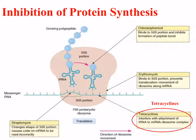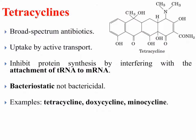The third family is the tetracyclines, and the main example is tetracycline, which works by interfering with the attachment of the transfer RNA molecule to the mRNA-ribosome complex. As the name suggests, tetracyclines contain four cyclic rings — tetra meaning four — visible in the diagram of tetracycline. They are taken up by active transport and inhibit protein synthesis by interfering with tRNA attachment to the mRNA and ribosome. They are bacteriostatic but not bactericidal. Examples include tetracycline, doxycycline, and minocycline.